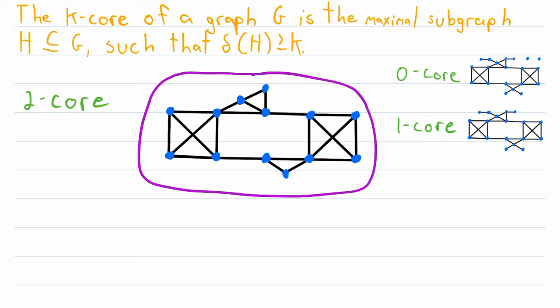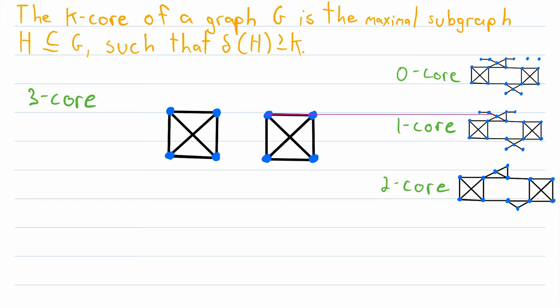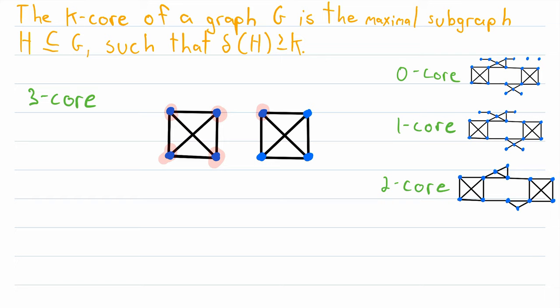Now let's take a look at the three-core of this graph. By looking at K-cores with higher and higher values of K, we are finding the most strongly interlinked sections of this graph — or network, if you prefer to think of it that way. For the three-core, we delete every vertex that does not have degree at least three. Several vertices have degree two, so we erase them one by one. After all deletions, what we have left are two complete graphs on four vertices — every remaining vertex has degree at least three. So this is the three-core of the graph.